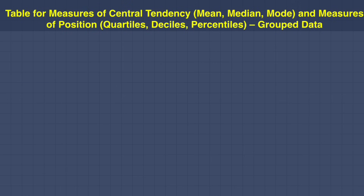Now let us construct the extended table that we usually use for solving measures of central tendency — mean, median, and mode — and measures of position — quartiles, deciles, and percentiles — for grouped data.